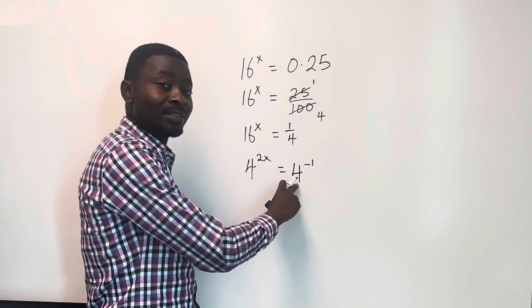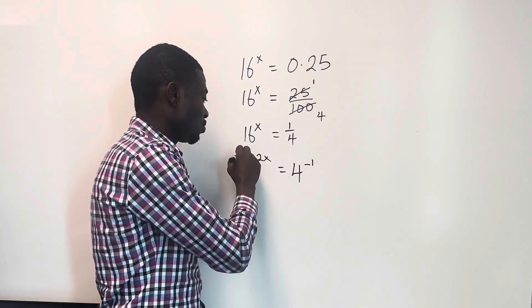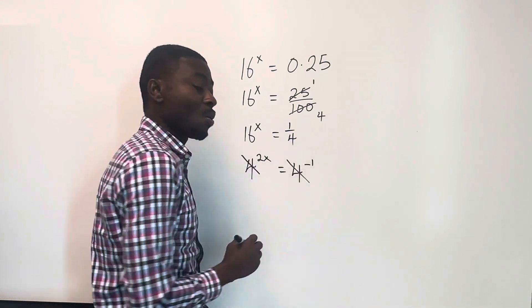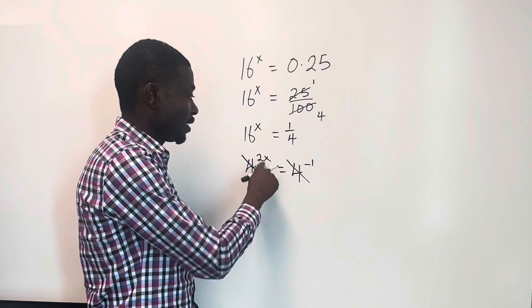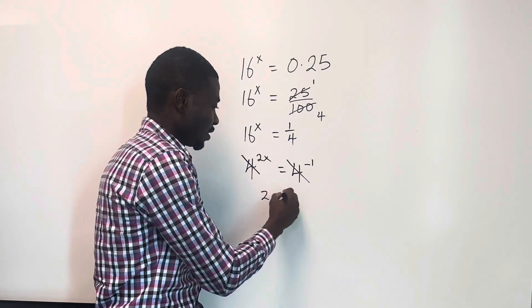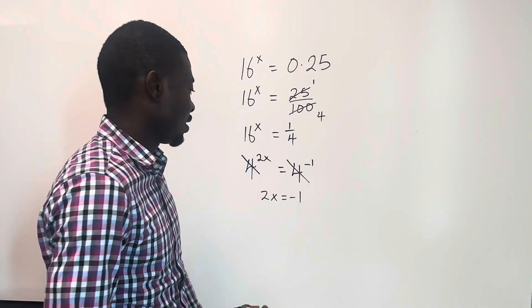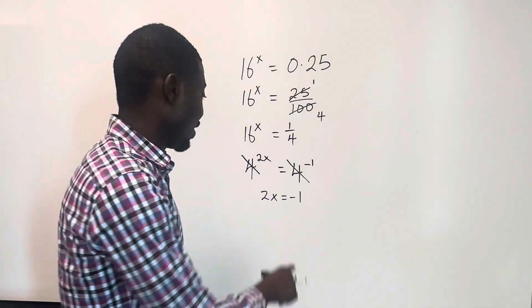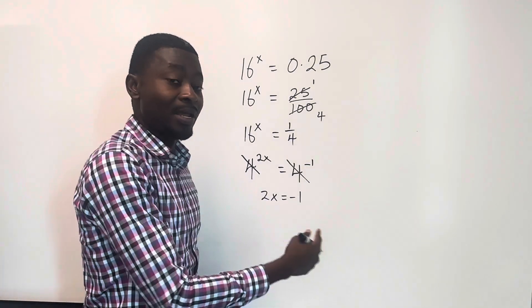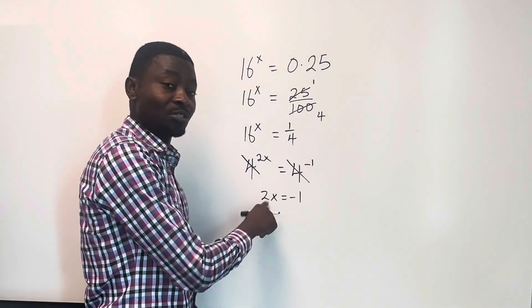Now, if you look at the base, you'll find that they are the same. So what do we do? We equate them. 4 with 4. Strike them out, leaving us with 2x is equal to negative 1. So from this, I can easily find the value of x by dividing both sides by the coefficient of x, which is 2.